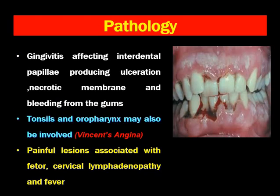What is the basic pathology? This usually presents as gingivitis affecting the interdental papillae, producing ulceration, necrotic membrane and bleeding from the gums. In this picture you can see the inflammation of the interdental papillae — there is ulceration and there is bleeding from the gums.